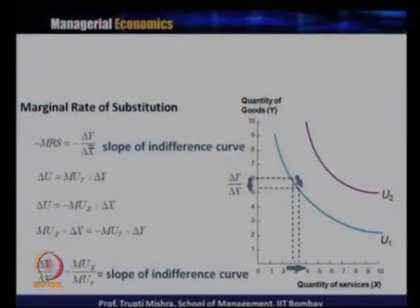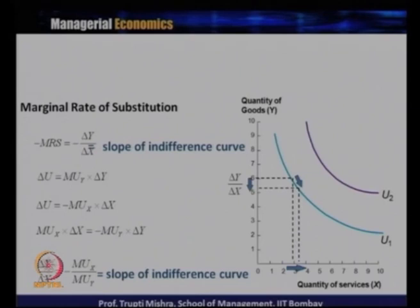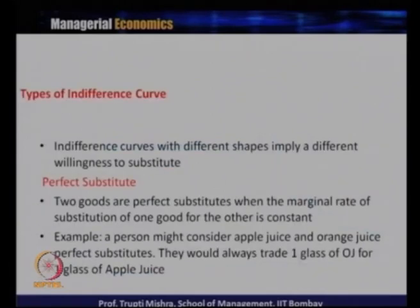MRS equals the ratio of marginal utilities: MRS = ΔY/ΔX = MUx/MUy. When X increases, utility changes by MUx × ΔX; when Y decreases, utility changes by MUy × ΔY. Since utility remains constant along the indifference curve, MUx × ΔX + MUy × ΔY = 0, which simplifies to ΔY/ΔX = MUx/MUy. This is the slope of the indifference curve and confirms that MRS equals the ratio of marginal utilities.